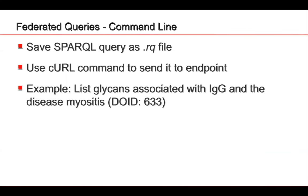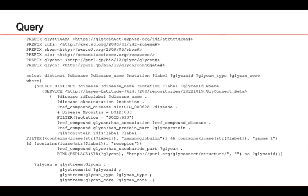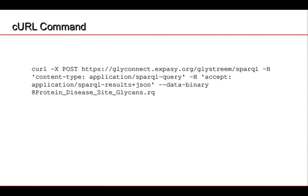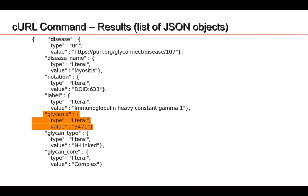Just to mention federated queries — these are queries where you can actually query other databases, possible for more complex queries, though the SPARQL query needs to be saved as a file and sent using a curl command. As an example, to list glycans associated with immunoglobulin and the disease myositis, the query queries both GlyStream glycans and GlyConnect metadata. You send the curl command from your terminal and get back a result in JSON format listing glycans and types of glycans found.